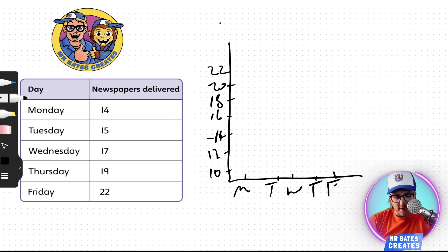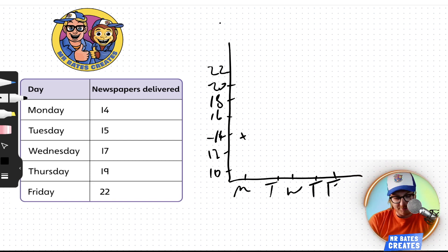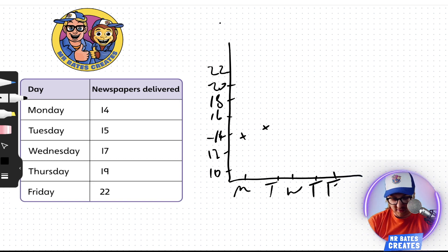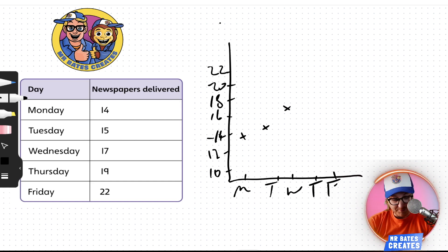So the first one would be Monday, and it's 14 newspapers delivered. I'd look on Monday and go all the way up to 14 and put a little X. Tuesday's 15, so I'd go all the way up from Tuesday to where it's 15 — it's in between 14 and 16, so I'm going to put a little mark there. Wednesday is 17, so I'm going to go up to 16, one more, so I'm going to go halfway in between 16 and 17. Thursday was 19, about there, and Friday's 22.